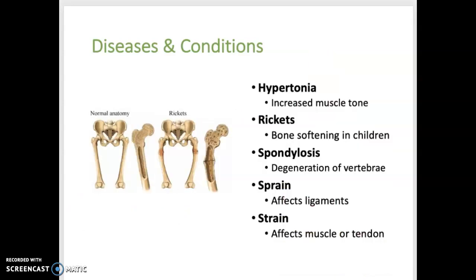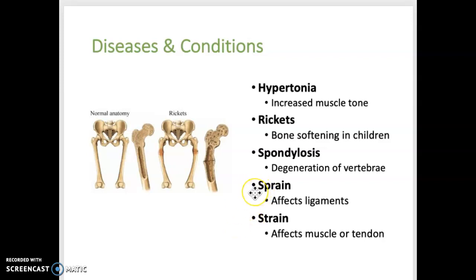Rickets is a form of osteomalacia in children caused by vitamin D deficiency — the softening and weakening of bones. As shown here, the bones can bend, with the legs bowing outward. Spondylosis is degeneration of vertebrae. A sprain and a strain are often used interchangeably but are not the same: a sprain is over-stretching or tearing of ligaments, whereas a strain is over-stretching or tearing of muscles and/or tendons.